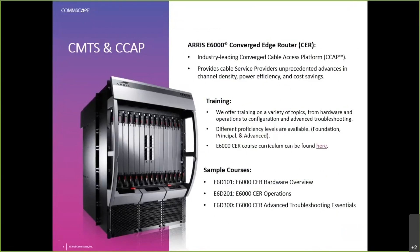If you look at the sample courses here, pay attention to the course numbering scheme. For example, the E6D-101 is the E6000 hardware overview. The 100 series courses are very basic in nature and most are e-learning courses. Next, E6D-201 is our E6000 operations course — either instructor-led or virtual instructor-led, and introductory in nature. Then we have our E6D-300 series, which are more advanced courses, such as the E6D-300 E6000 advanced troubleshooting essentials. These course codes will help you search for all the different courses in AERIS Academy.